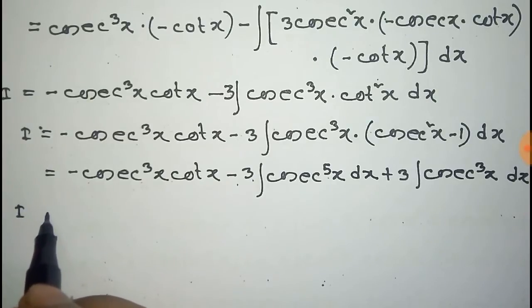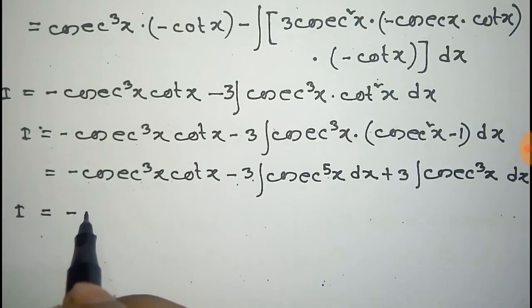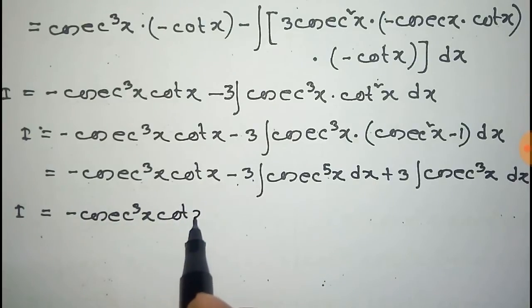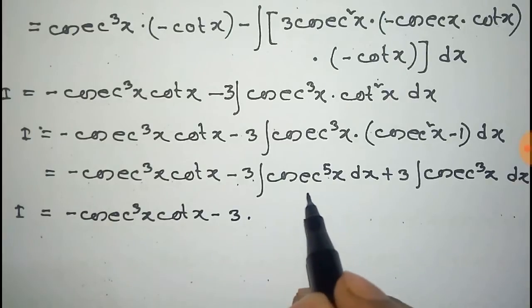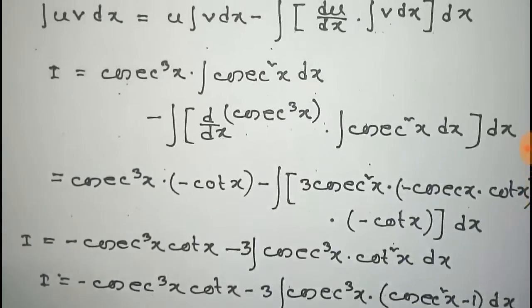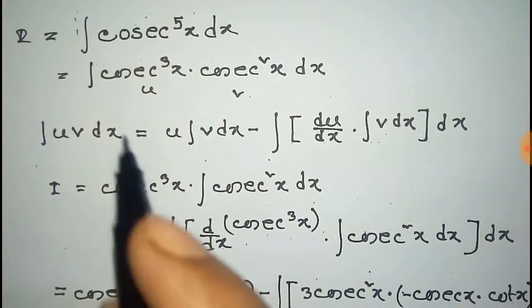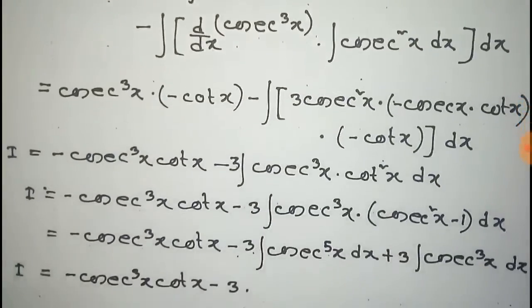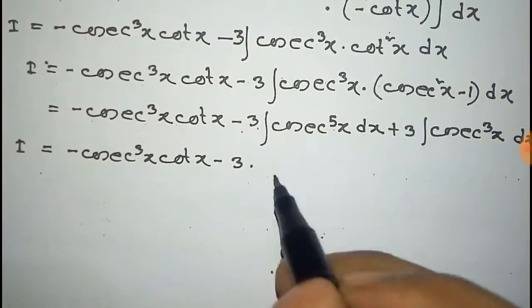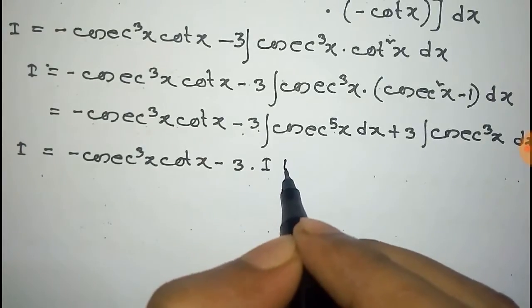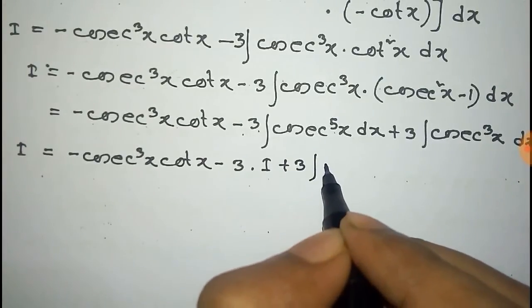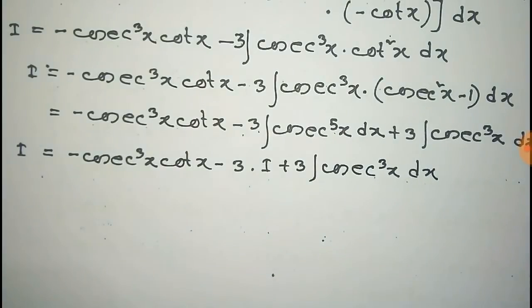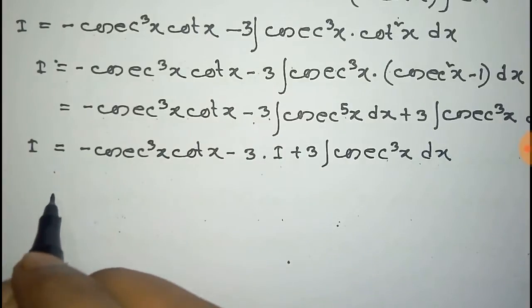Thus I is equal to minus cosec to the power 3x into cot x, minus 3 times the integration of cosec to the power 5x. Since the integration of cosec to the power 5x was considered as I according to our initial consideration, we can write it as I. So we have I plus 3 integration of cosec to the power 3x dx, and this 3I and the original I makes 4I.